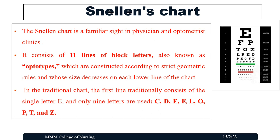The Snellen's chart is a familiar sight in physician and optometrist clinics. It usually consists of 11 lines of block letters, also known as optotypes, which are constructed according to strict geometrical rules and whose size decreases on each lower line of the chart. In the traditional chart, the first line consists of a single letter E, and only nine letters are commonly used: C, D, E, F, L, O, P, T, and Z.